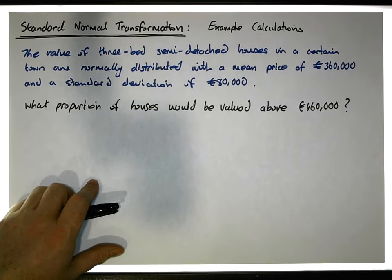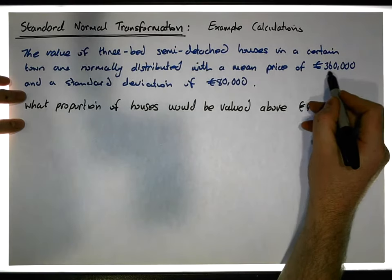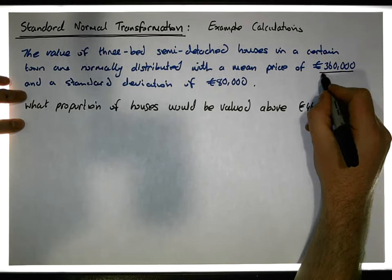The first thing we should do is identify the population parameters. The mean is 360,000 euros, so mu equals 360,000 euros, and the standard deviation sigma equals 80,000 euros.